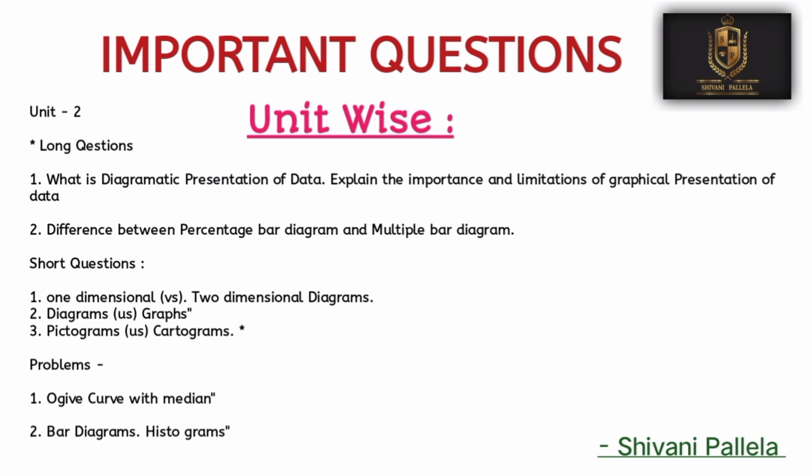For Unit Number 2, the important long theory questions are: diagrammatic representation of data, graphical representation, and differences between percentage bar diagram and multiple bar diagram. For problematic questions: median, bar diagrams, and histograms. For short questions from Unit 2: differences between one-dimensional and two-dimensional diagrams.